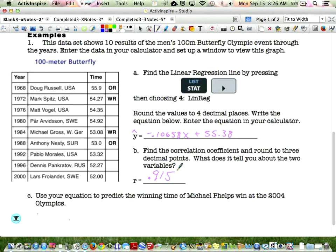It should have been negative, sorry. So as one increases, as the time dates increase, the years increase, the times are coming down. And it's really close to negative one, so it's a strong correlation.